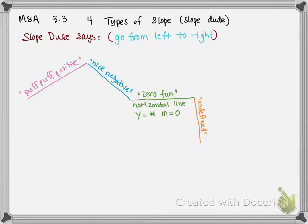Now, undefined, the worst curse word ever uttered in math, it is a vertical line. And its equation would be x equals some number. And it has a slope that's undefined.